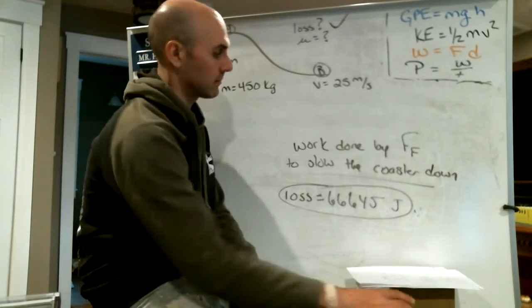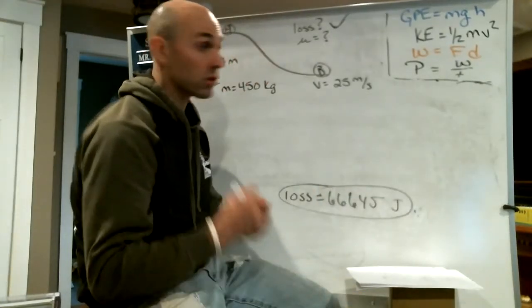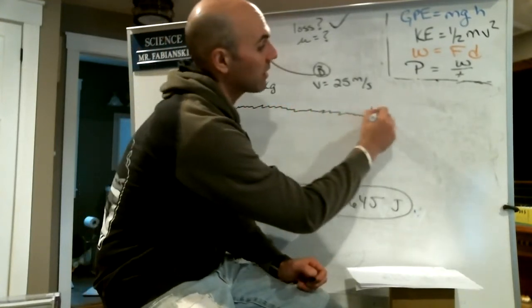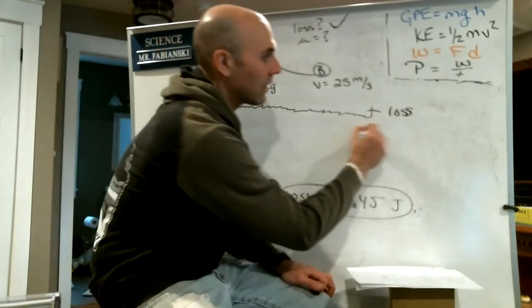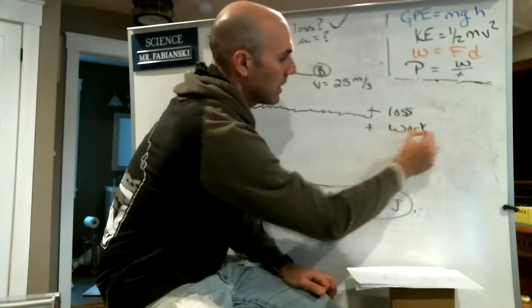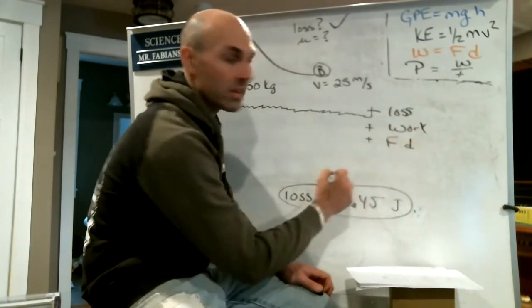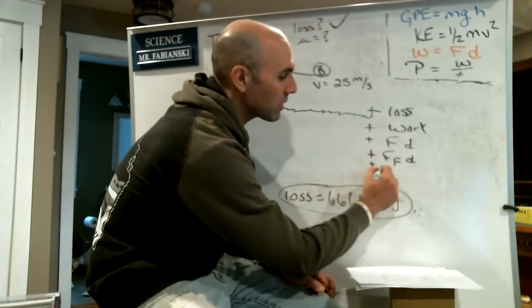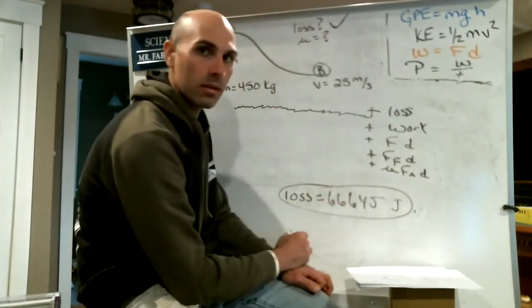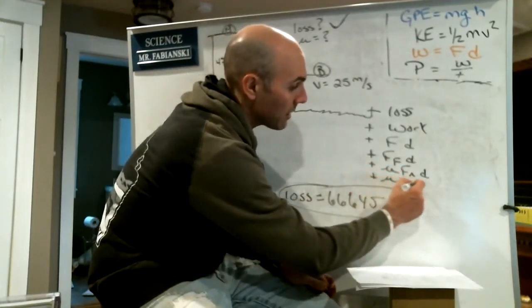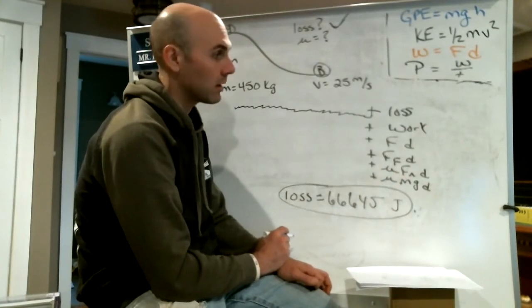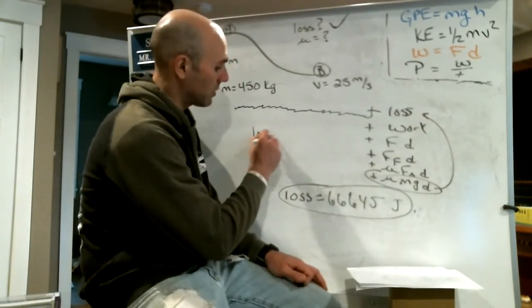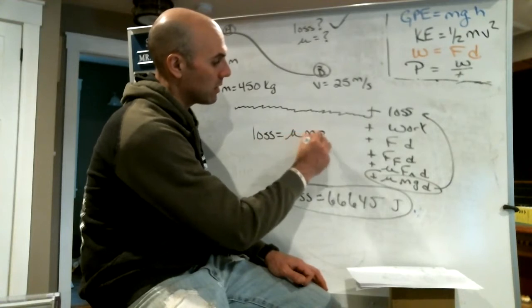Now we want to find mu. Recall: loss equals work, work equals F×d, F equals force of friction times displacement, force of friction equals mu×Fn times d, and Fn equals mg. So loss equals mu·m·g·d.